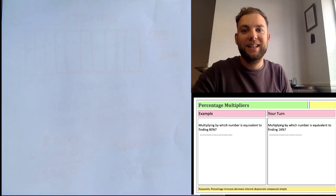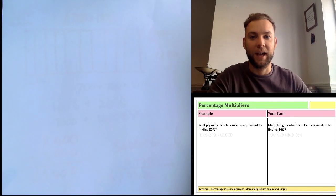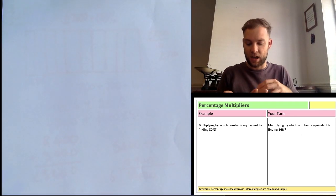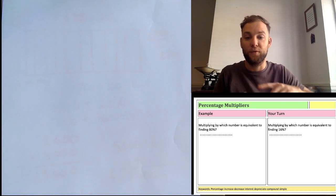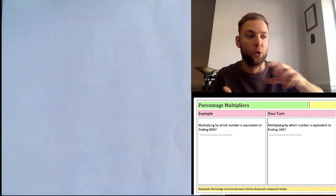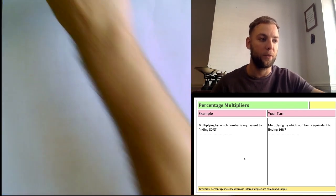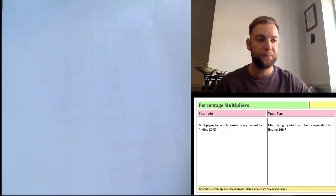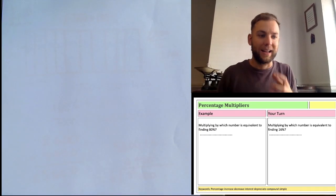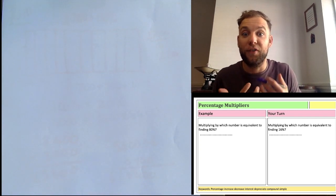Hello and welcome to today's lesson on percentage multipliers. Percent means out of a hundred — it comes from the Latin 'per cent', meaning 'per out of 100'. What we're doing here is working out what the percentage is, and the reason I mention that is because when working out something like 80 percent, there's an easy way to do it if you have a calculator.